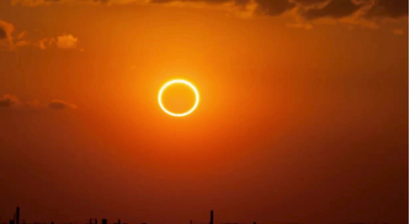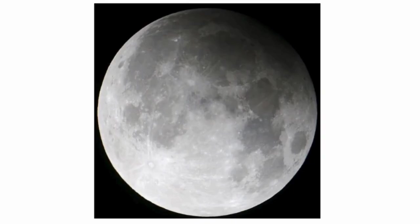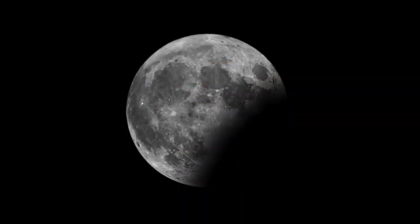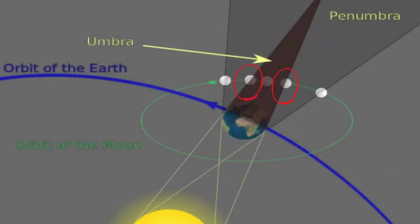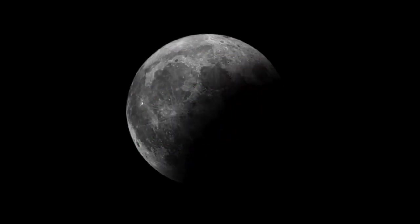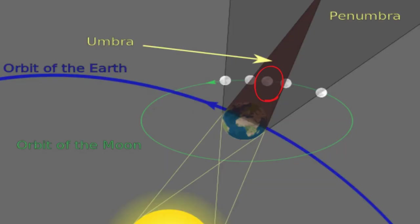There are also different types of lunar eclipses. A penumbral lunar eclipse is when the moon passes through the earth's penumbral shadow. A partial lunar eclipse is when a portion of the moon passes through the earth's umbral shadow — and here's what this looks like. And finally, a total lunar eclipse is where the entire moon passes through the earth's umbral shadow.